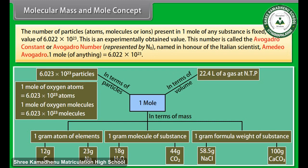This is an experimentally obtained value. This number is called Avogadro constant or Avogadro number, represented by N₀, named in honor of the Italian scientist Amedeo Avogadro. One mole of anything is equal to 6.022 × 10²³.